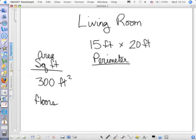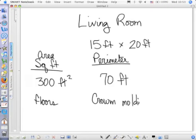You are going to need to list your perimeter. Now the perimeter of a rectangle is twice the base plus twice the height, or 15 plus 15 plus 20 plus 20, which would be 70 feet. And it's feet, not feet square, because it's linear. What do we need perimeter for? Crown moldings and baseboards.